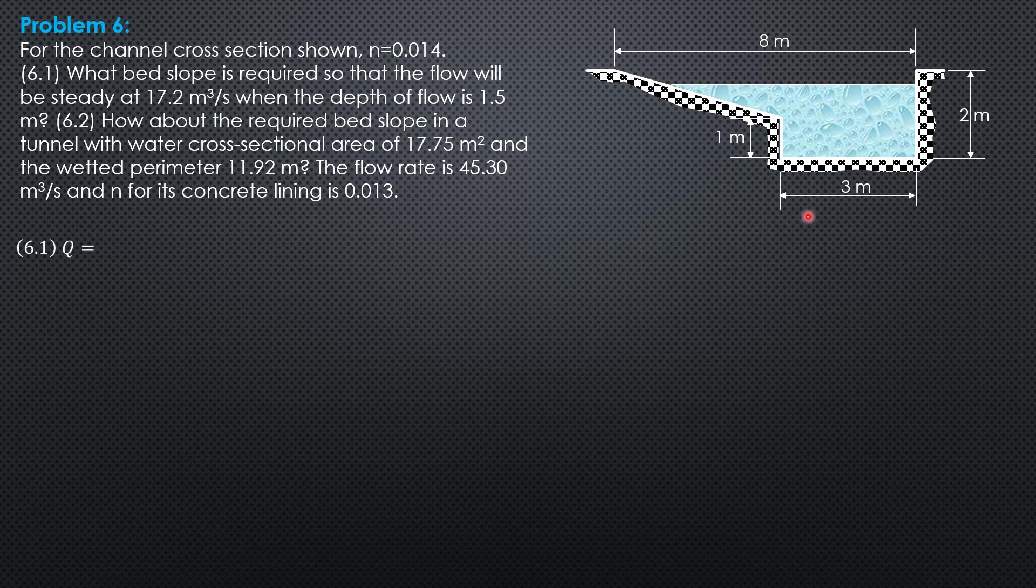The formula Q equals area over N hydraulic radius to the 2 thirds slope to the 1 half. Let's develop a formula in terms of area and perimeter. We replace hydraulic radius by area over wetted perimeter. So that the formula for discharge in terms of area and perimeter is area to the 5 thirds slope to the 1 half over N perimeter to the 2 thirds.